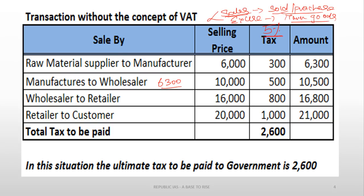In the chart shown, you can see a product is sold to the manufacturer at 6,300 rupees — the price of the product is 6,000 but 5% extra tax is added, so it is sold at 6,300. This could be considered as sales tax or excise duty. The manufacturer then adds value and sells the same product to the wholesaler at 10,500, where 10,000 is the price and 500 is the 5% tax. At each level of the supply chain, tax is levied.